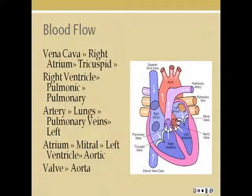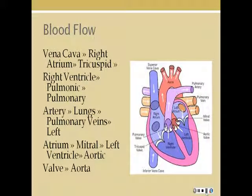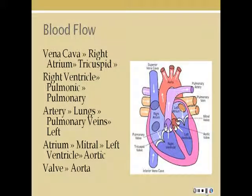For blood flow: the right atrium receives deoxygenated blood from the superior and inferior vena cava. Blood flows from the right atrium through the tricuspid valve into the right ventricle, which then pumps blood into the lungs by way of the pulmonary artery. The left atrium receives oxygenated blood from the lungs via the pulmonary veins, blood flows through the mitral valve into the left ventricle, and the left ventricle pumps blood through the aortic valve into the aorta and into the body.